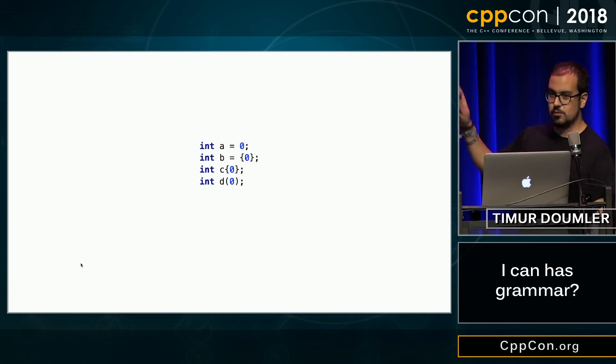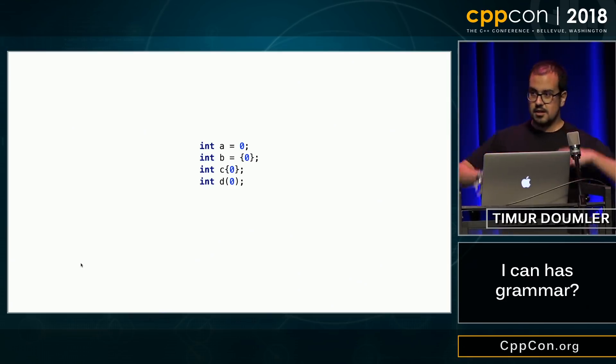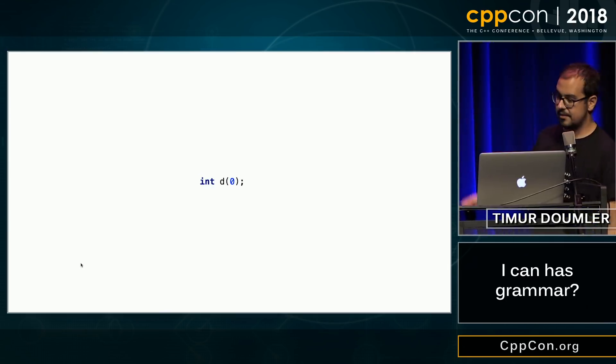Great topic, initialization. We already saw a talk on initialization this week. There's about 50 ways you can initialize an int. These are just four of them. The best one, of course, is the one with parentheses, because it's so great that parentheses appear everywhere and conflict with everything. So that's definitely my favorite one.